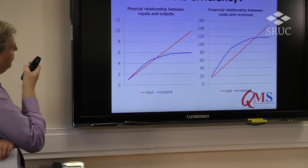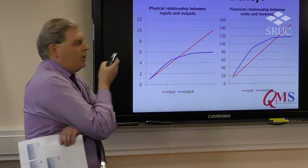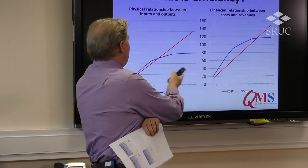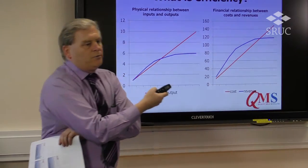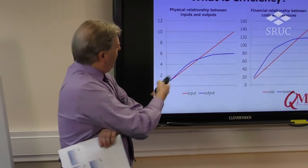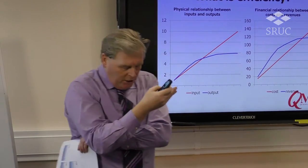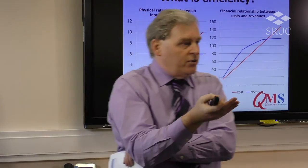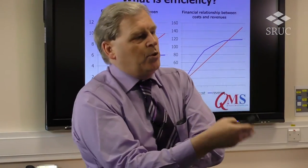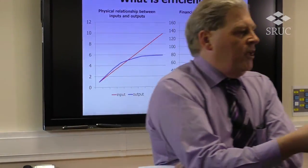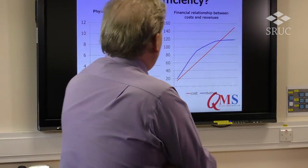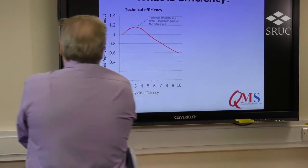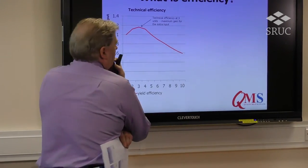It's also about costs and revenues. All I've done here is convert the input into a cost and the output into a revenue. Again, the lines have similar patterns, but that's our basic starting point in relation to efficiency: it's all about inputs and outputs, it's all about costs and revenue.